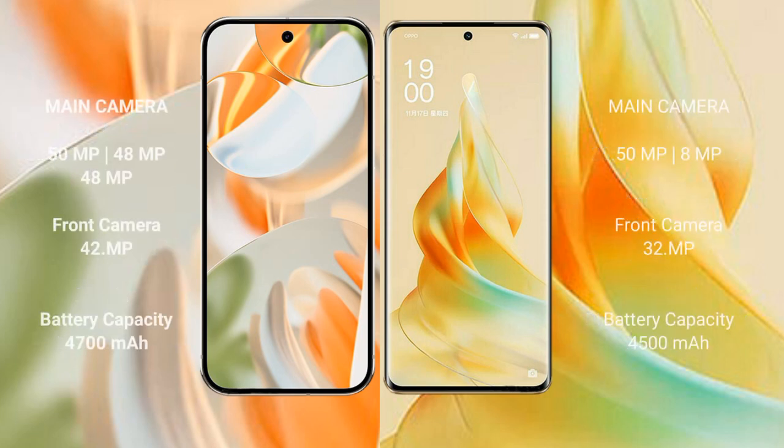Google Pixel 9 Pro features a triple rear camera setup: 50MP, 48MP, and 48MP, with a 42MP front camera. Oppo Reno 9 Pro features a dual rear camera setup: 50MP and 8MP, with a 32MP front camera.